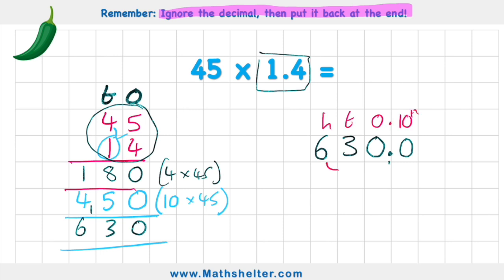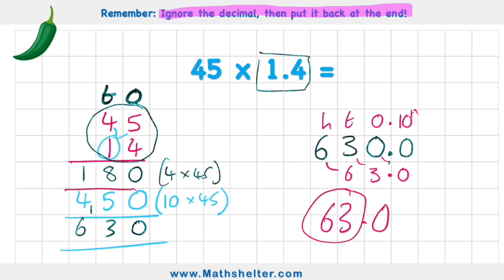My six comes into the tens column, my three goes into the ones column. Put back my decimal and then move this zero out into the tenths. My answer is 63.0, or just 63. Easy.